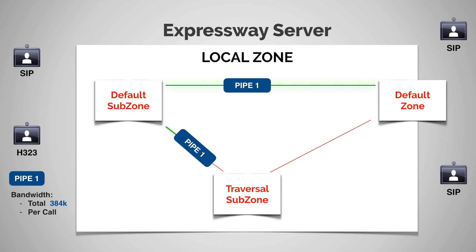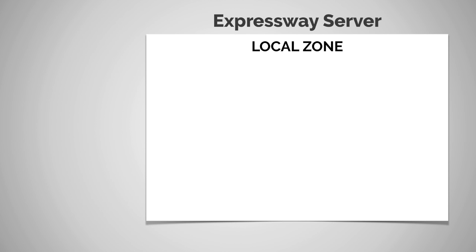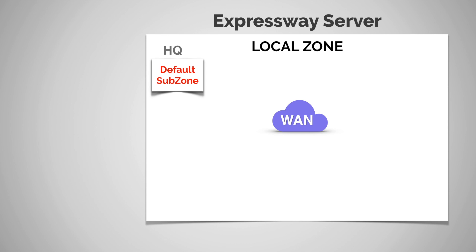Pipes can be applied to single links or multiple links, but you can also apply two pipes to a single link. To explain this, let's set up a different scenario. Let's say we've got a single Expressway server set up to cover multiple physical locations, all communicating across a WAN network. The default subzone is HQ, and then we have site one and site two, which could be in another city or even another country — just another physical location.